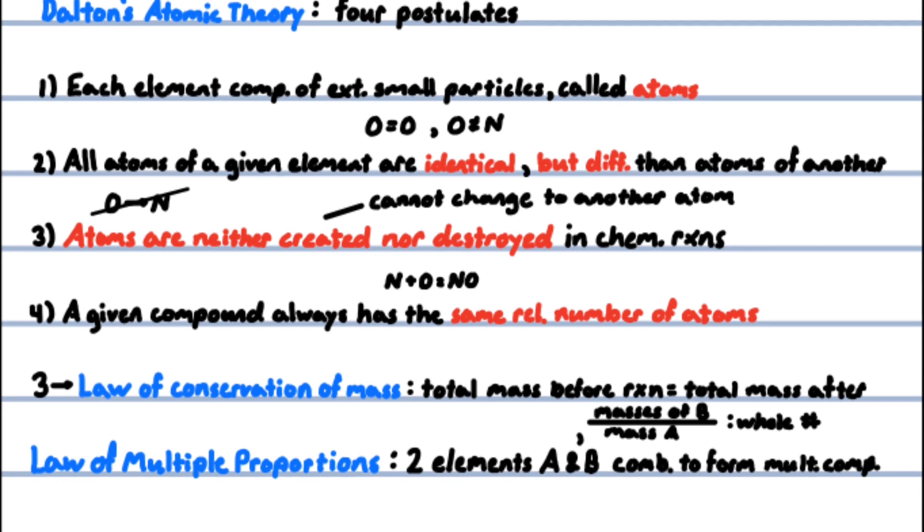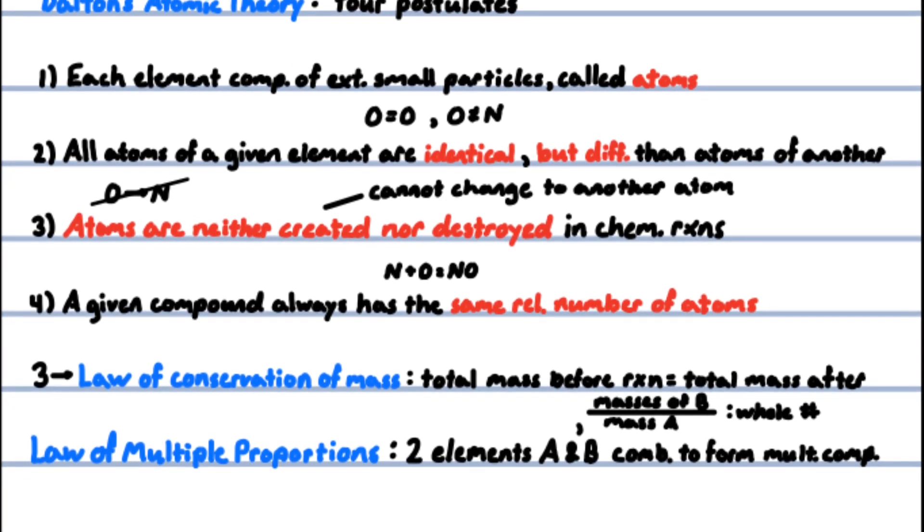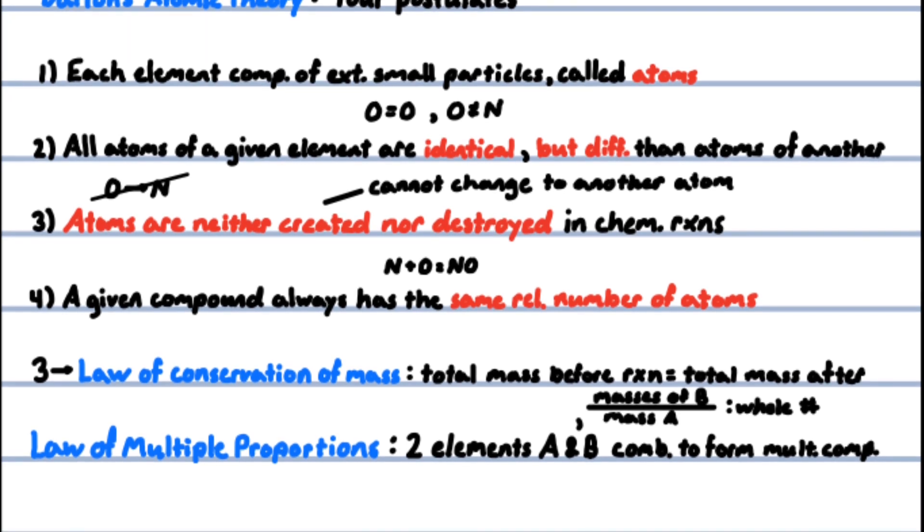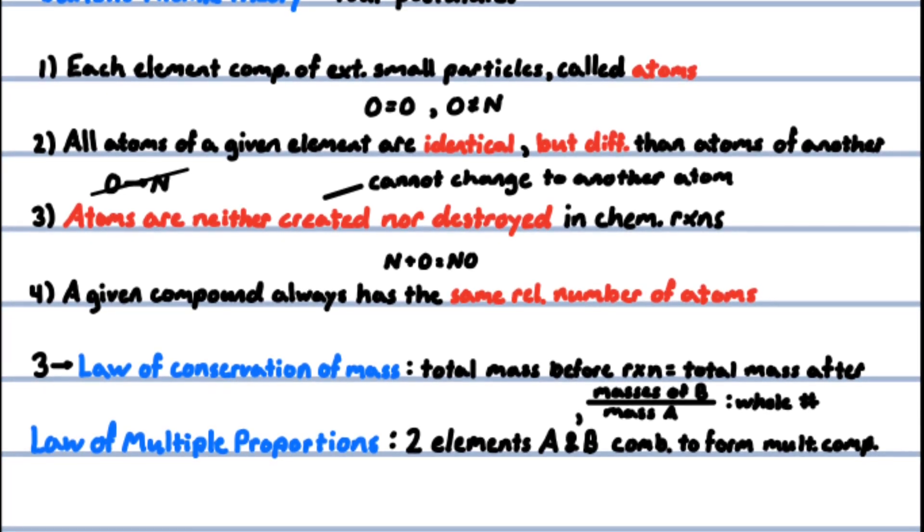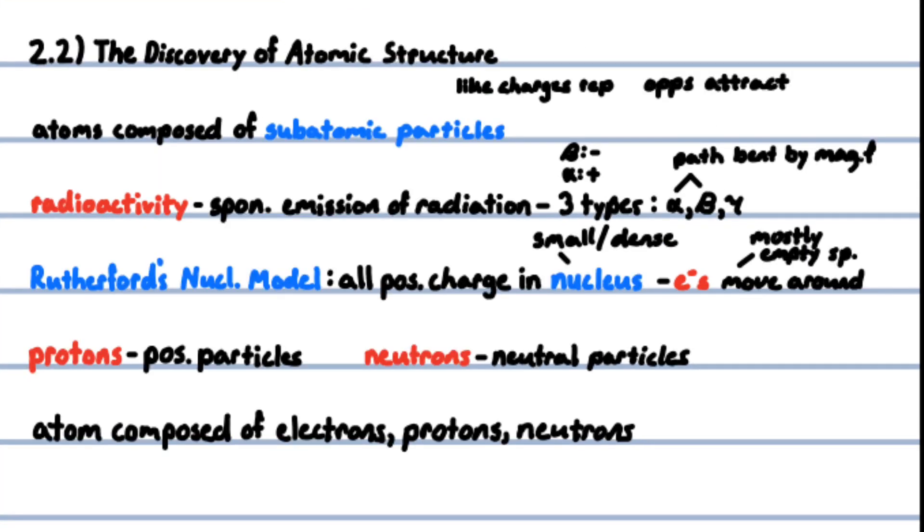For example, water and hydrogen peroxide both consist entirely of hydrogen and oxygen. In forming water, eight grams of oxygen combine with one gram of hydrogen. In forming hydrogen peroxide, it takes 16 grams of oxygen to fully combine with one gram of hydrogen—twice as much.